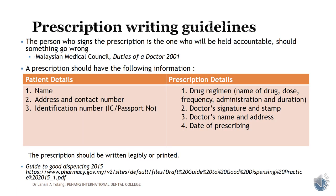These are prescription writing guidelines. A person who signs a prescription is the one who will be held accountable should something go wrong — a very important statement from the Malaysian Medical Council. A prescription should essentially have patient details and prescription details. Patient details must include the name, address, contact number, and very importantly the IC number. The drug regimen must include the name of the drug, the dose, frequency, how it is administered, and duration of usage.